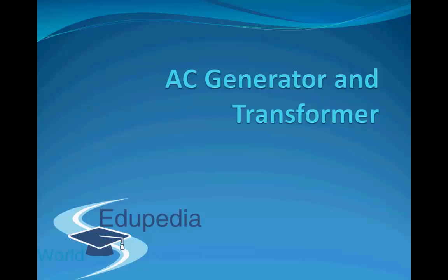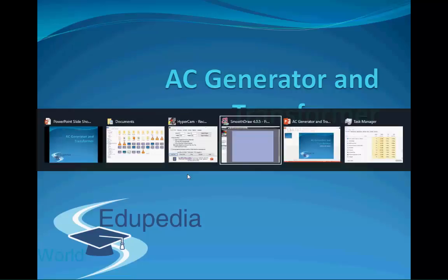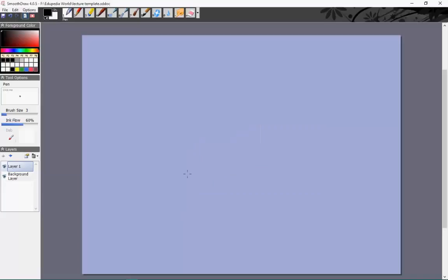Hello everyone, and thanks for watching Edupedia World videos. In this video we study two devices that are used to create alternating currents and alternating voltages: the AC generator and the transformer. Let's look at the working of the AC generator first.